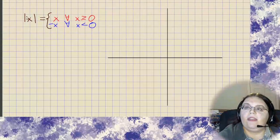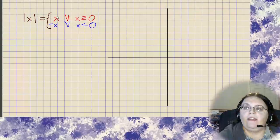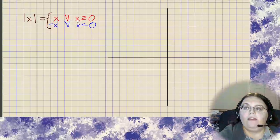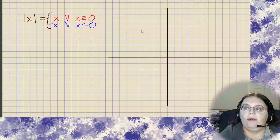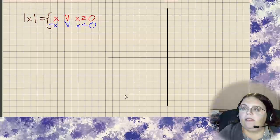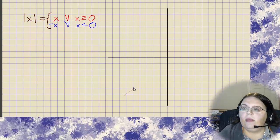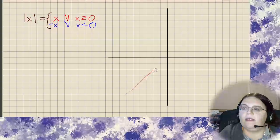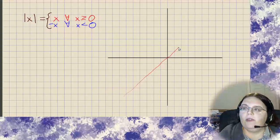So here we see that the absolute value of x is just the same as x for all values of x which are greater than 0. So that looks like this right here, good old identity function, very easy to graph.